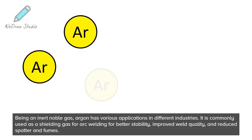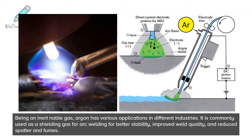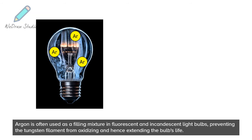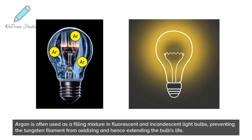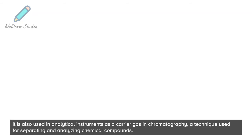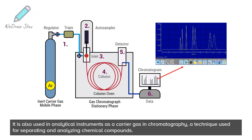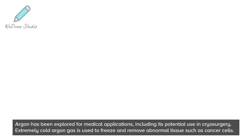Being an inert noble gas, argon has various applications in different industries. It is commonly used as a shielding gas for arc welding, providing better stability, improved weld quality, and reduced spatter and fumes. Argon is also often used as a filling mixture in fluorescent and incandescent light bulbs, preventing the tungsten filament from oxidizing and extending the bulb's life. It is additionally used in analytical instruments as a carrier gas in chromatography, a technique used for separating and analyzing chemical compounds.